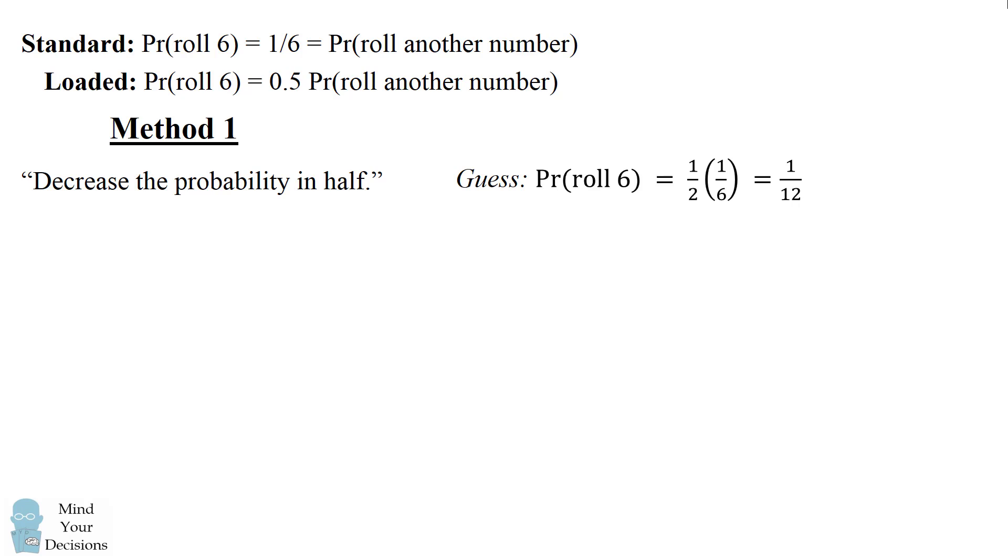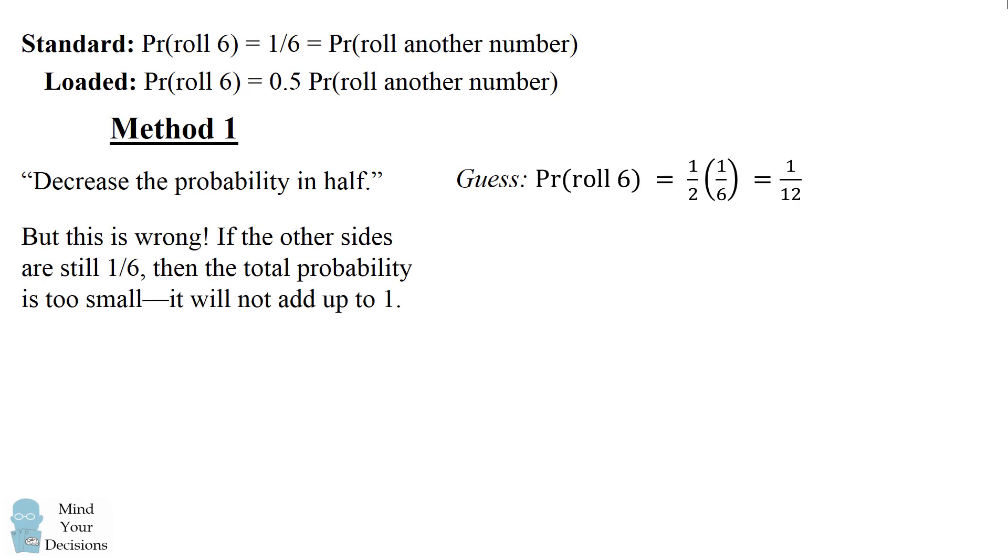But there's a problem when you do this. If you add up all the other sides, which still have a probability of 1 sixth, then the total probability will be too small. It will not add up to 1. You will actually get that the probability of these numbers will be equal to 11 over 12. So this is the wrong answer because we need the sum of all the probabilities to be equal to 1.